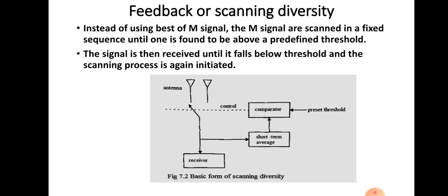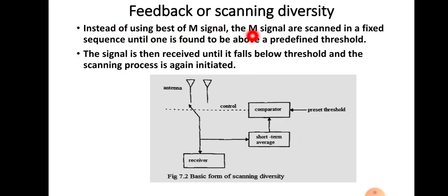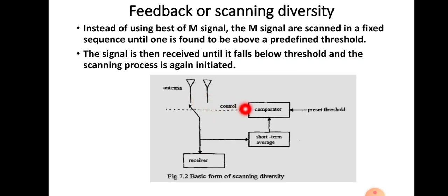In feedback or scanning diversity, instead of using the best of m signals, the m signals are scanned in a fixed sequence until one is found to be above a predefined threshold. There is a threshold level at the receiver side, and each antenna signal is compared with this threshold. The first signal above the threshold is selected and demodulated.